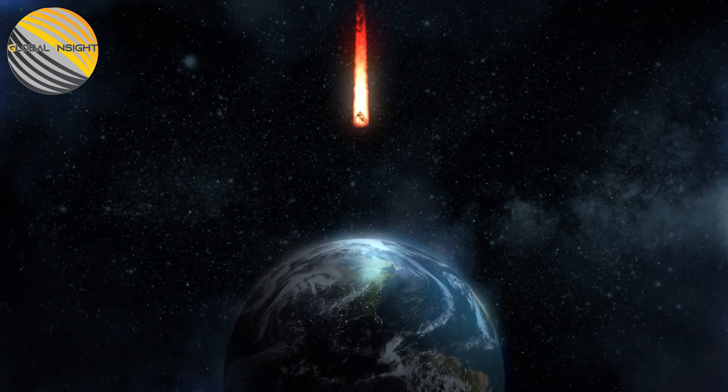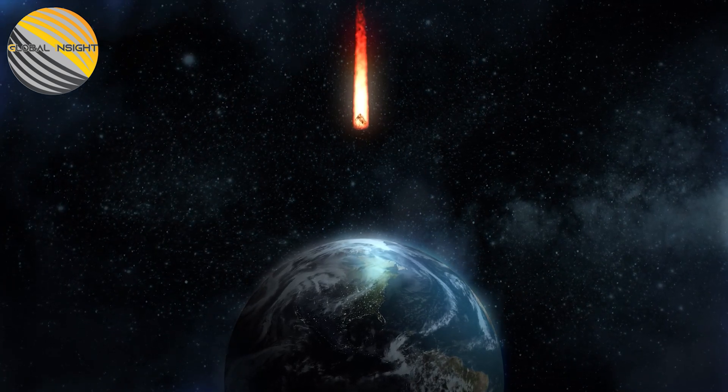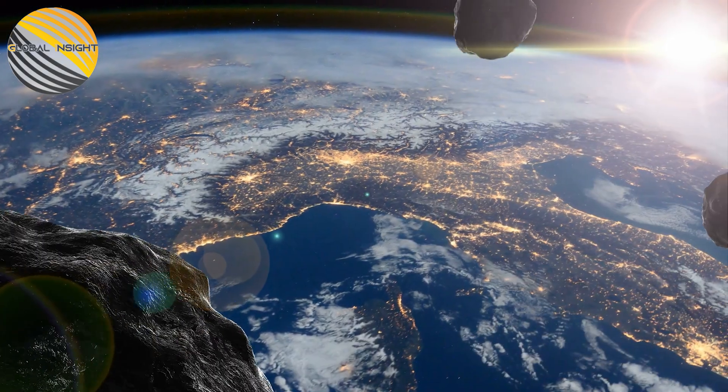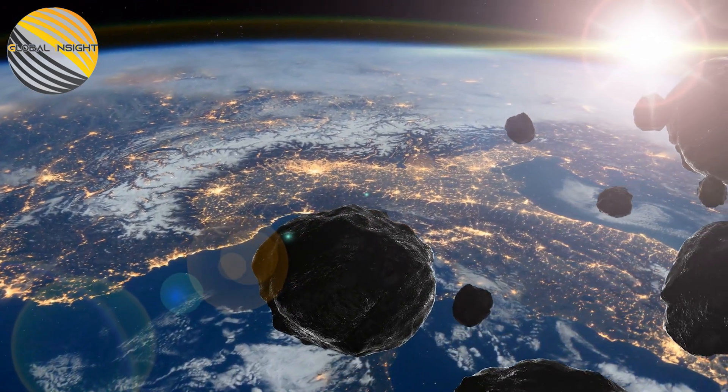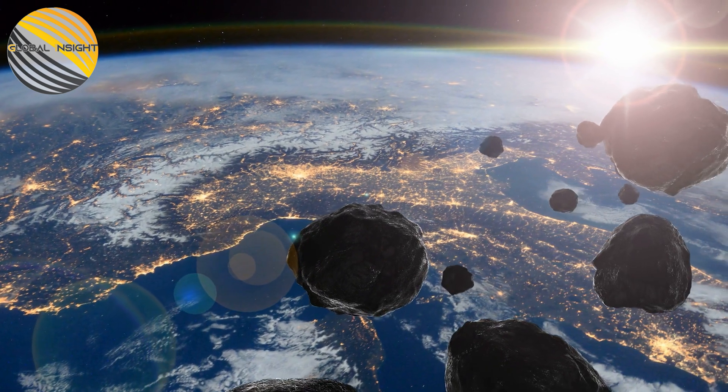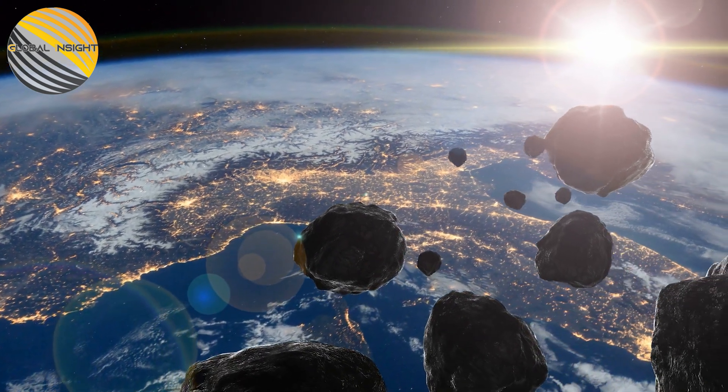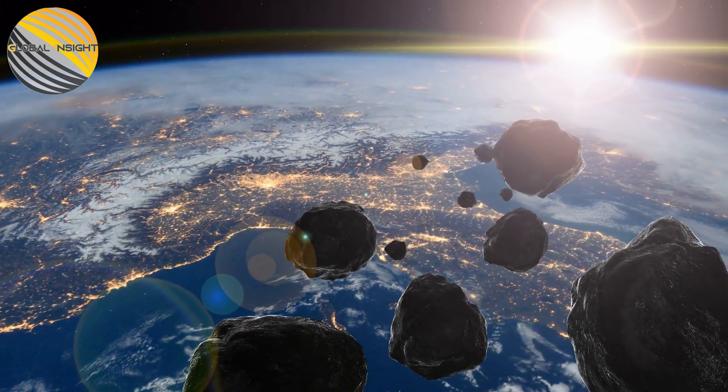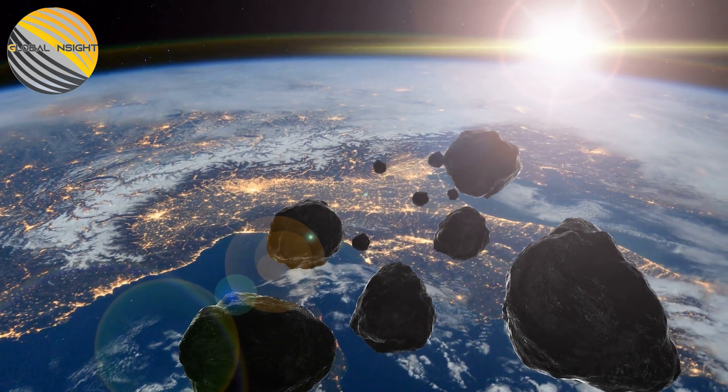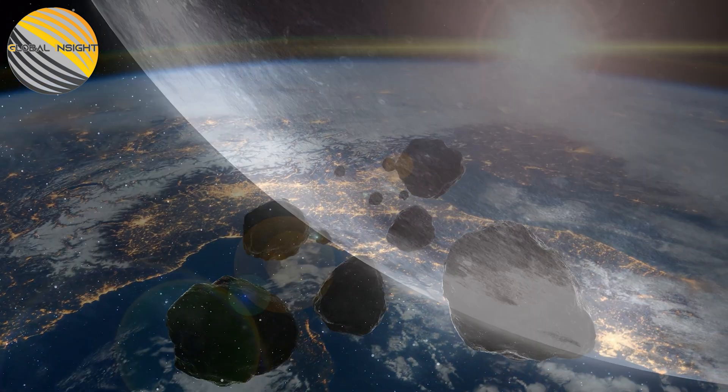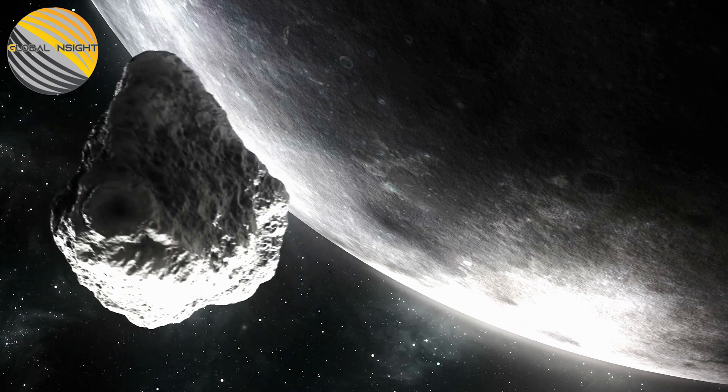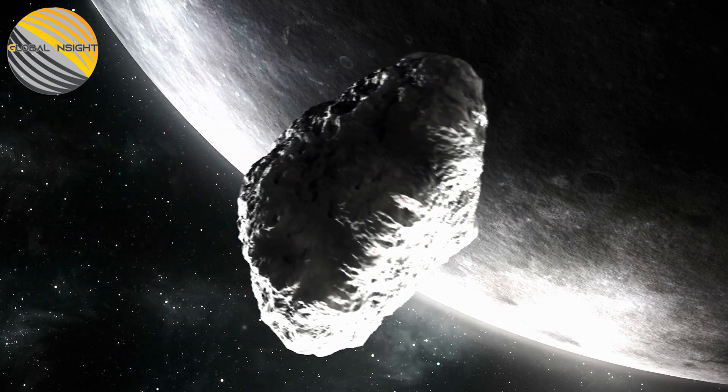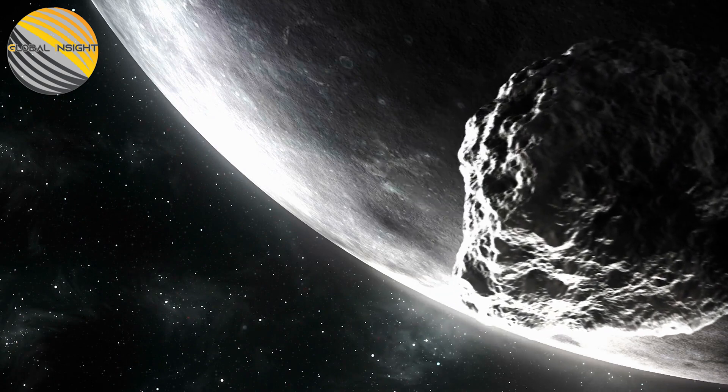Another 100 meter diameter asteroid came within 70,000 kilometers of Earth in 2019. It was made public just a few hours before it flew by. Although it was not as close, its size was significantly more troubling. We need to accelerate our search for objects close to Earth in light of these near misses.